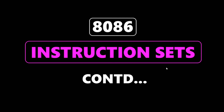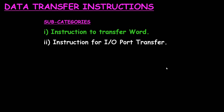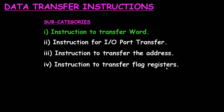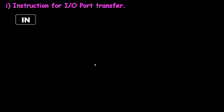Welcome to another video on 8086 microprocessor instruction sets. In the last video, we covered data transfer instructions and their subcategories: transfer of word, input/output port transfer, address transfer, and flag register transfer. In this video, we are going to start with the instruction for input/output port transfer.